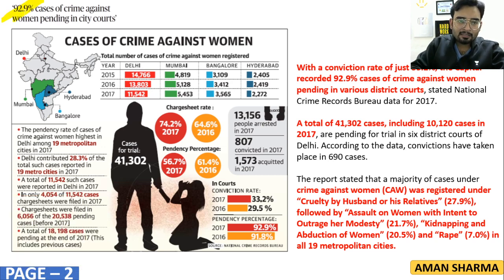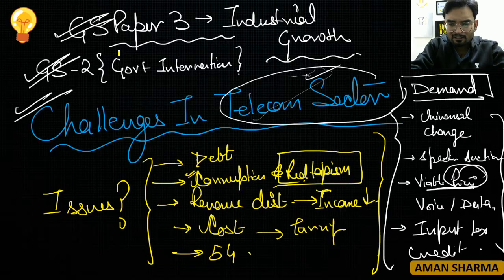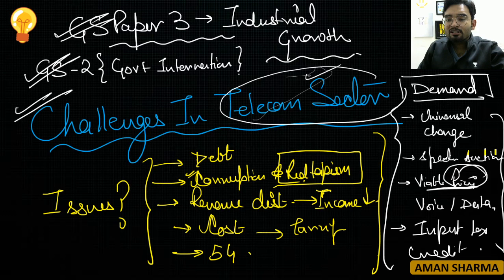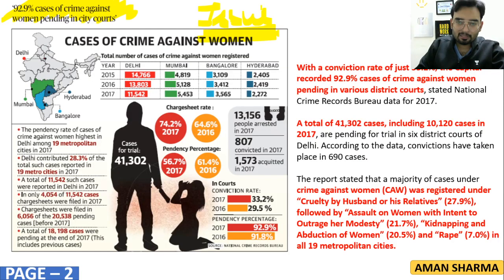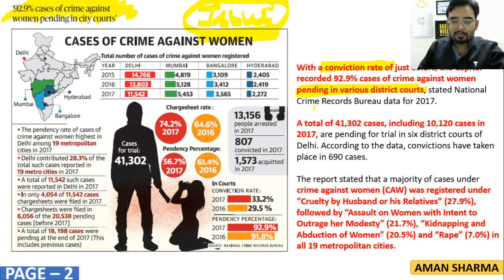The next article: 92.9% of cases of crime against women are pending in city courts. This is a very important issue. In our country, the conviction rate is very low. In Delhi, the conviction rate is only 33.2%, and a large number of cases are pending in district courts.